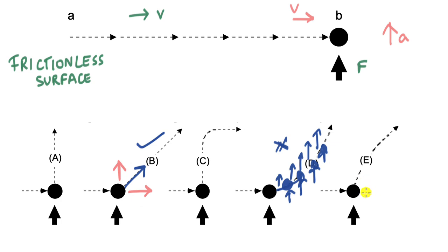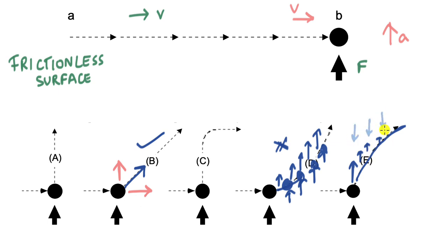Option E says the ball gains some vertical velocity, but then the vertical velocity decreases constantly — you can see the path becoming more plateaued. That does not make sense either: for velocity to decrease there must be acceleration in the opposite direction, but nowhere in this scenario is that happening. So option B is the correct answer.